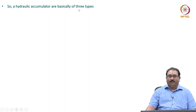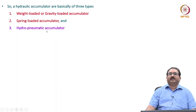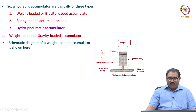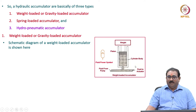Hydraulic accumulators are basically three types: weight loaded or gravity loaded accumulator, spring loaded accumulator, and hydropneumatic accumulator. Let us begin with weight loaded or gravity loaded accumulators. The schematic diagram of a weight loaded accumulator is shown here. It is a cylinder body with a piston, dead weights on top, connected to fluid from the pump which then goes to the actuator. As shown in the symbol, the dead weights are placed on the piston.